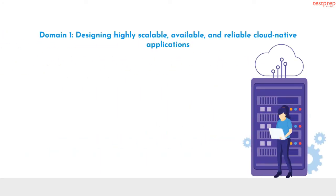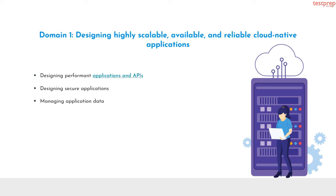Let us now discuss course outline topics in detail. Domain 1 is designing highly scalable, available, and reliable cloud-native applications. It contains four subtopics: designing performant applications and APIs; designing secure applications; managing application data; and re-architecting applications from local services to Google Cloud Platform.